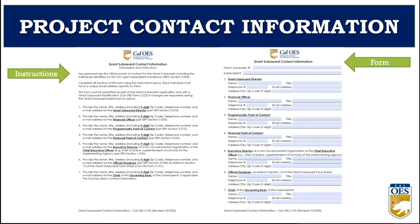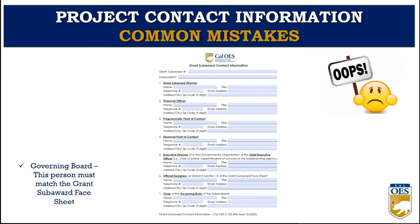The project contact information form: remember to use the most updated forms from the website, and don't forget to write the entire nine-digit zip code. Each point of contact must be different so that we are able to reach an alternate if there is an urgent matter. No whiteouts if you have to handwrite something. On lines one and two, the grant subaward director and the financial officer must be different people. The subaward number will be given to the approved applicant. Also ensure the official designated by the governing board on line six is the person who signs the grant subaward face sheet.